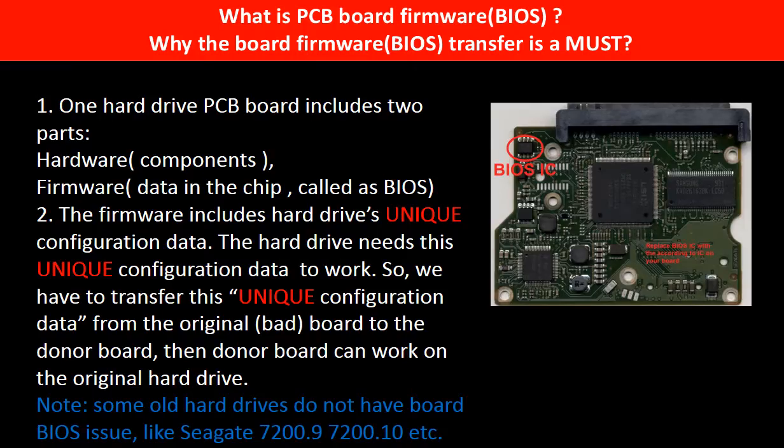What is the PCB board firmware, also called PCB board BIOS? For most hard drives, one PCB board includes two parts: hardware and firmware. The firmware includes the hard drive's unique configuration data. The hard drive needs this unique configuration data to work. So we have to transfer this unique configuration data from the original board to the donor board. Then the donor board can work on the original hard drive.